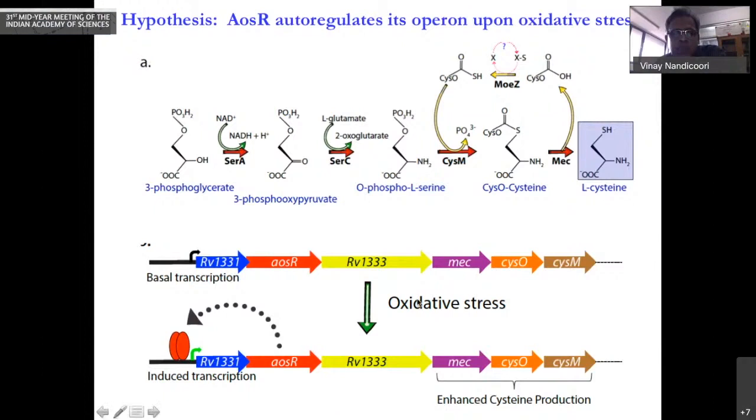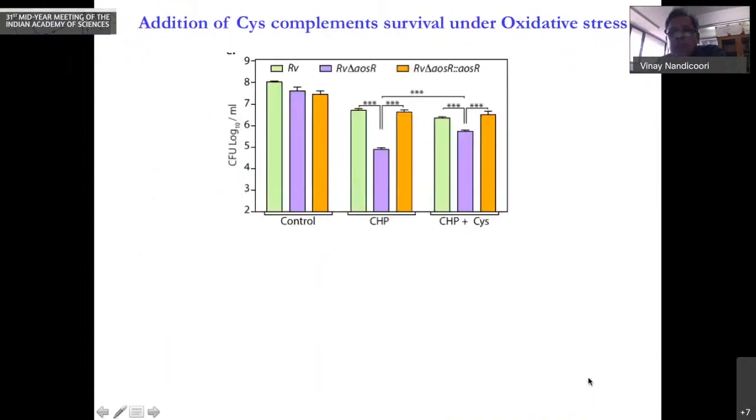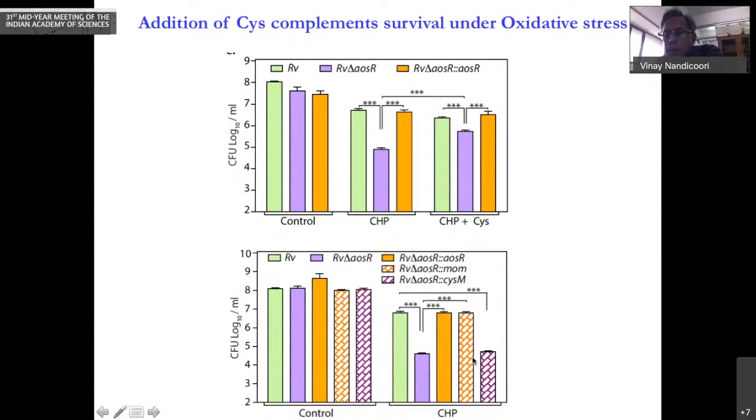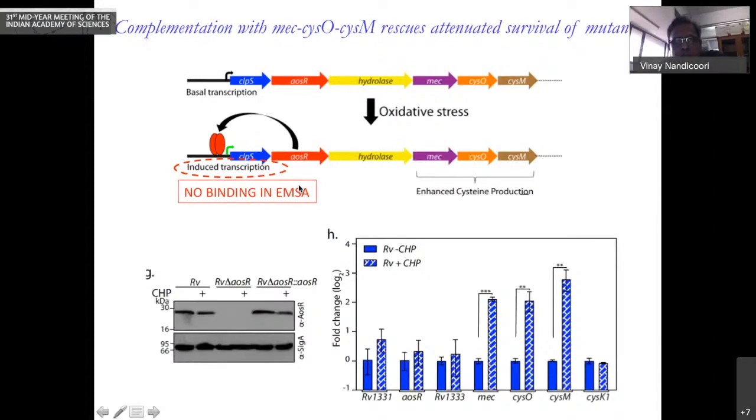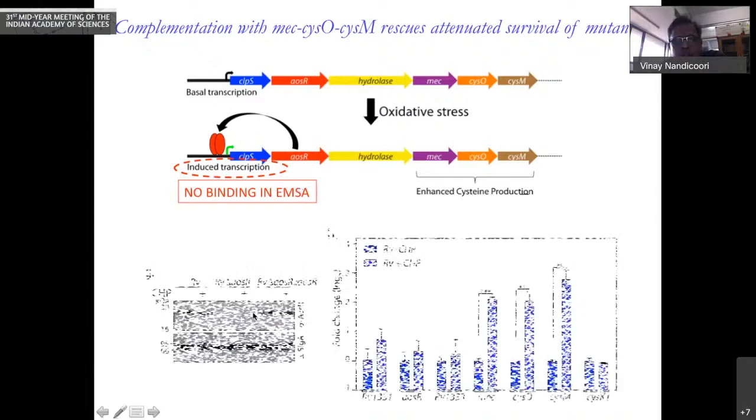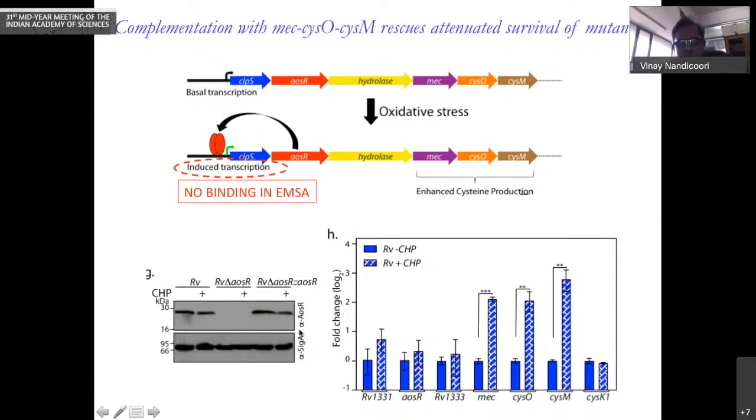Our initial hypothesis was that the transcription factor is regulating its own transcription as well as that of downstream genes. However, when we proved this hypothesis by providing cysteine alone or overexpressing all three genes in the operon, in both cases, we get complementation suggesting that these three genes' expression is indeed regulated by the transcription factor. However, when we did analysis, we found that there is no binding in our electrophoretic mobility shift assays. There was no difference in the expression profile of the transcription factors. We can see that in the Western blot.